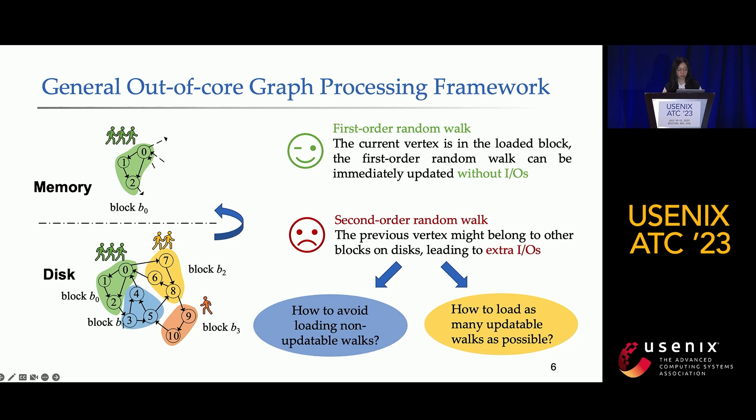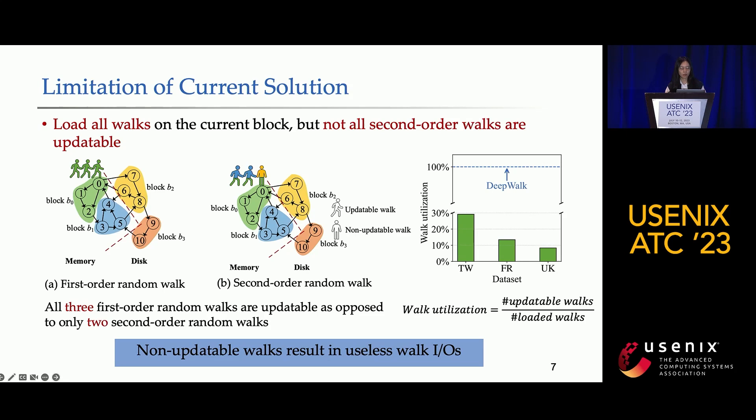First, how to avoid loading non-updatable works. Lack of previous vertex information in memory can lead to non-updatable works. Second, how to load as many updatable works as possible. More updatable works can accelerate random walk processing.